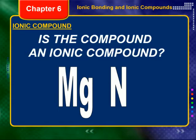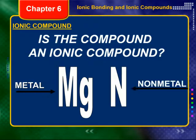Is this an ionic compound? Well, we see a metal — magnesium — and we see a non-metal — nitrogen. So we have a metal and a non-metal. When these ionize, the magnesium is going to be a positive charge, and the nitrogen is going to be a negative charge. So we have oppositely charged ions. This should be an ionic compound.